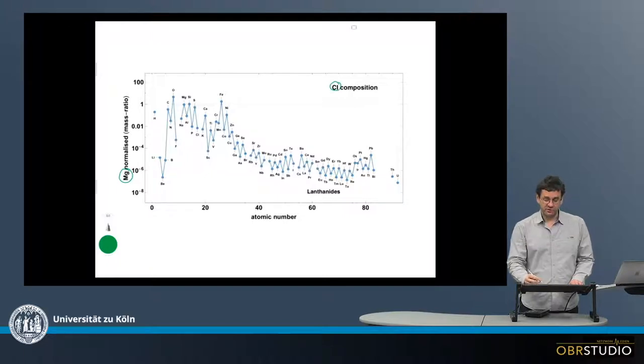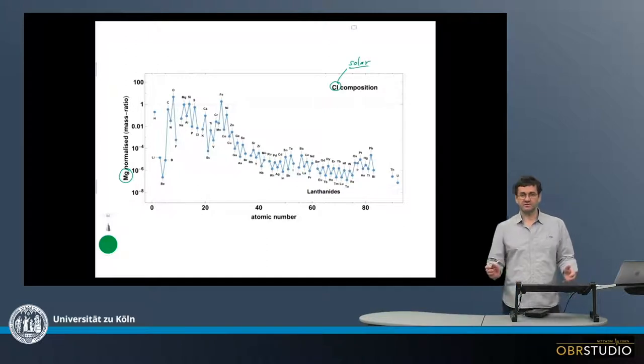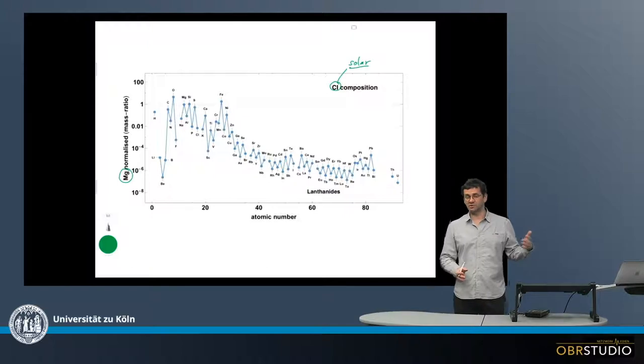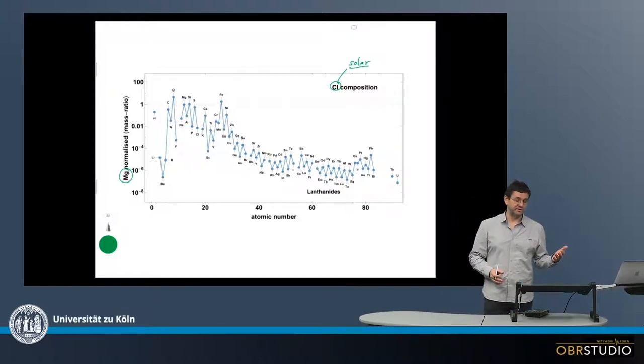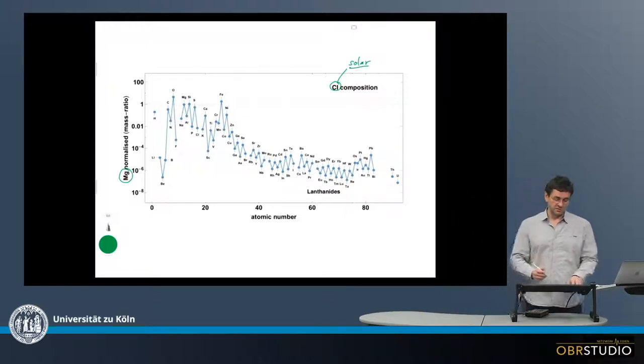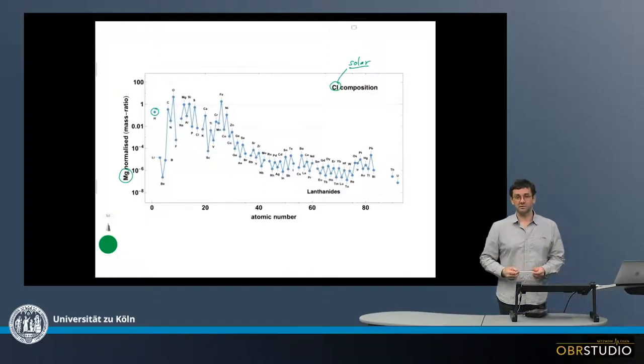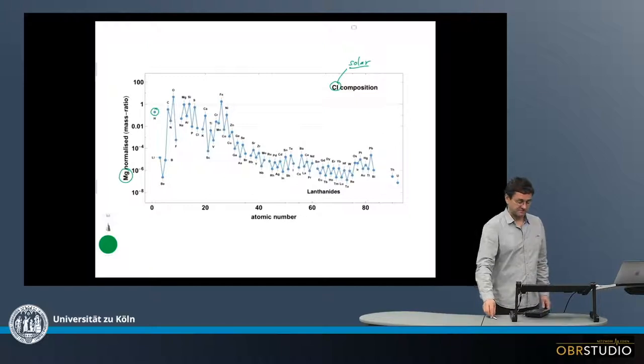It is also quite helpful to know that CI composition is often referred to as the solar composition. This is of course not really true as the Sun has much more hydrogen, helium, or also carbon or nitrogen, but still this is what is often found. You can already see here that hydrogen is of course not as abundant as in the Sun.